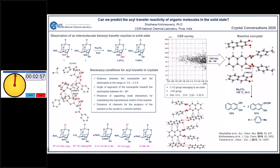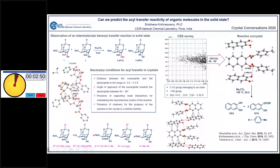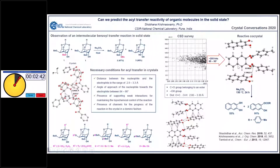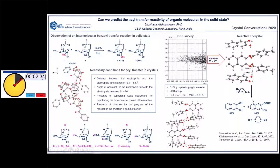The topic of my talk is: can we predict the acyl transfer reactivity of organic molecules in the solid state? This study started with the observation of the facile intermolecular benzoyl transfer reaction in the pistols of dibenzoate 1, when treated with solid sodium carbonate below the melting point. Basically, a benzoyl group migrates from the axial position of one molecule to the free hydroxyl group of another molecule, giving the tribenzoate and the diol in almost quantitative yield.